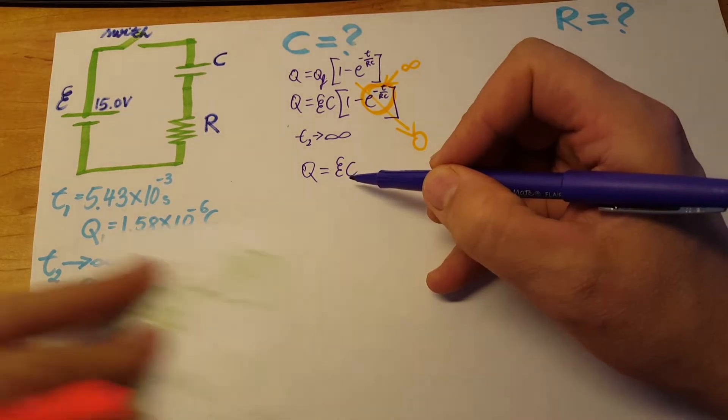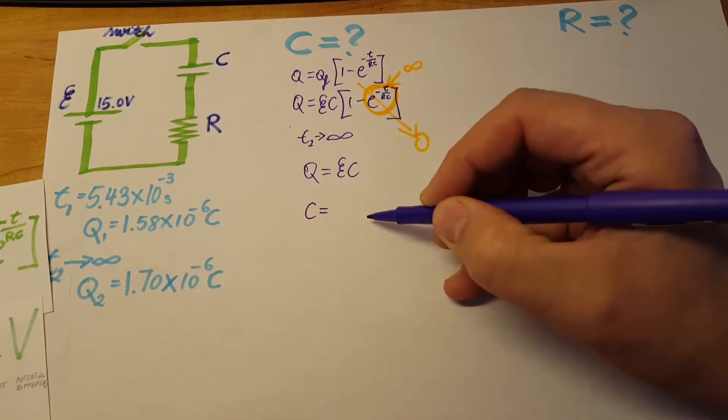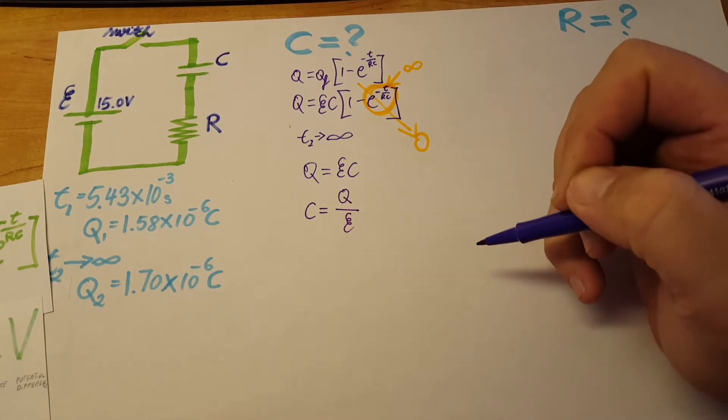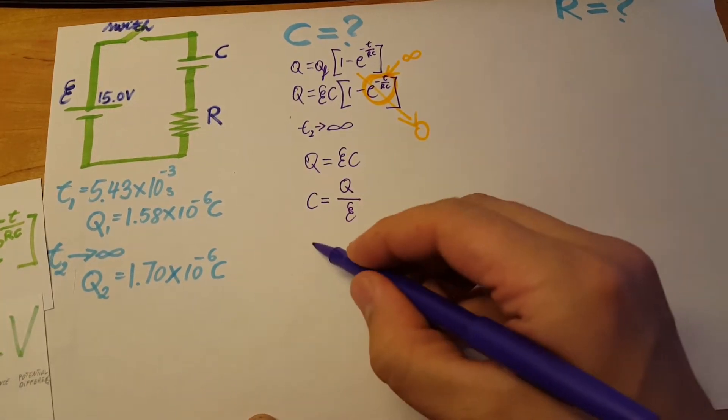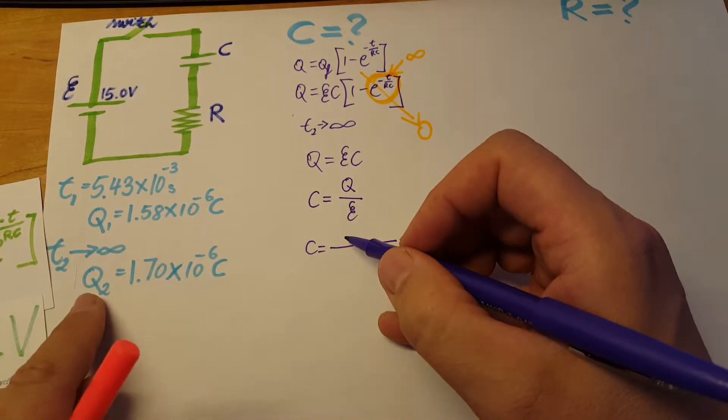So Q equals EC. From here we can solve for our capacitance. That's what we are looking for: C equals Q over E.